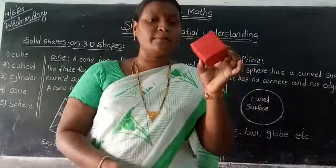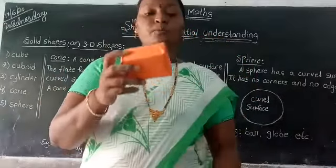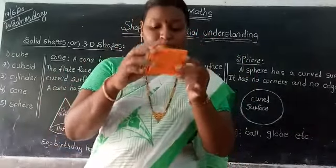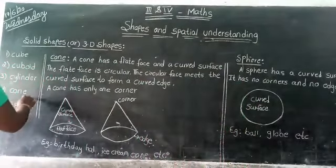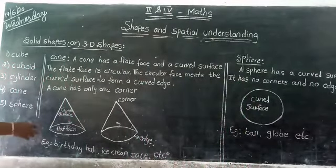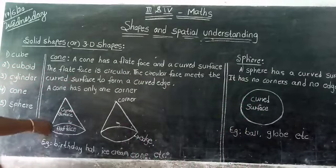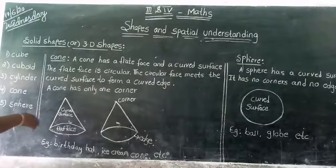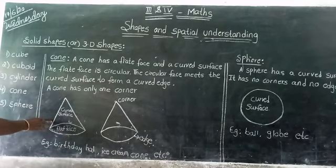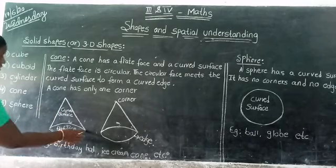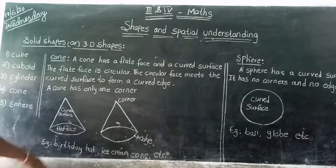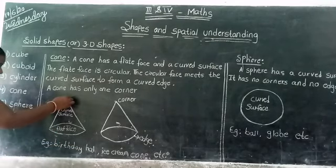Cube has square-shaped faces and cuboid has rectangle-shaped faces. Now we will discuss about cone and sphere. A cone has a flat face and a curved surface. The flat face is circular. This is the flat face — it is circular in shape. And this is the curved surface.